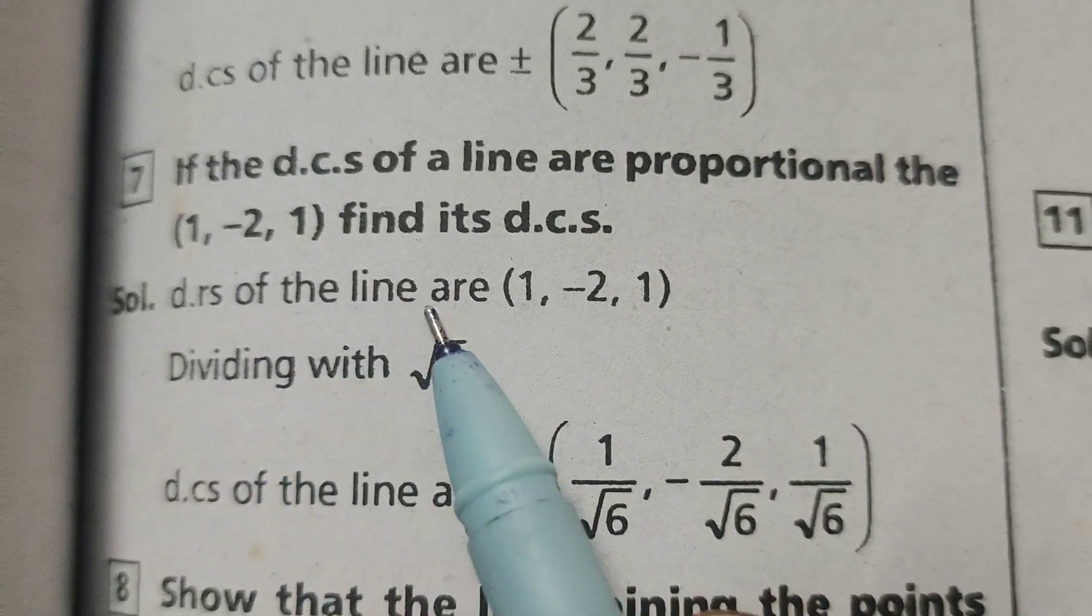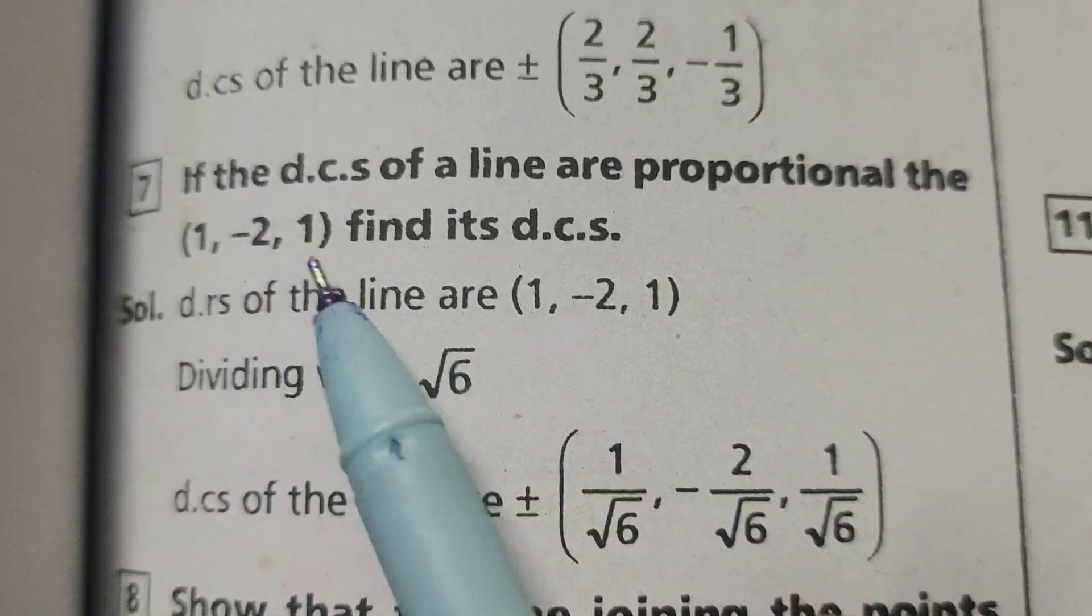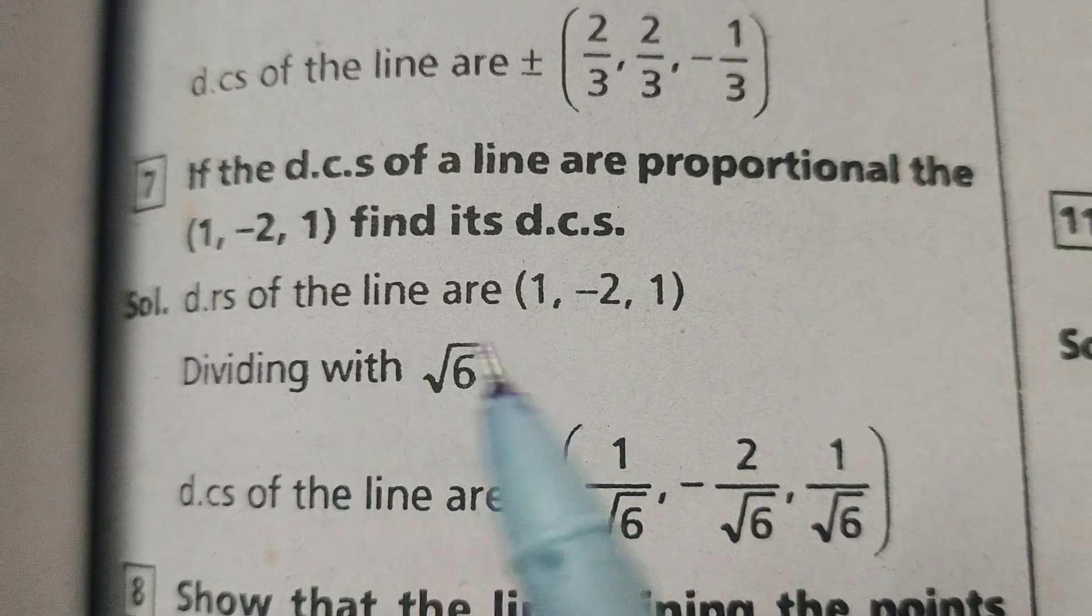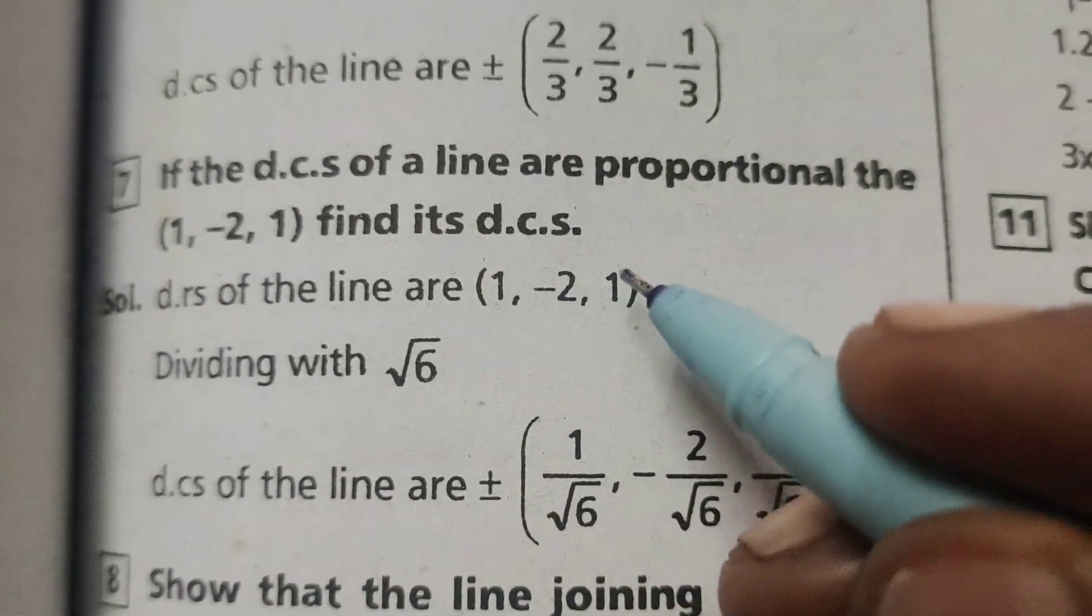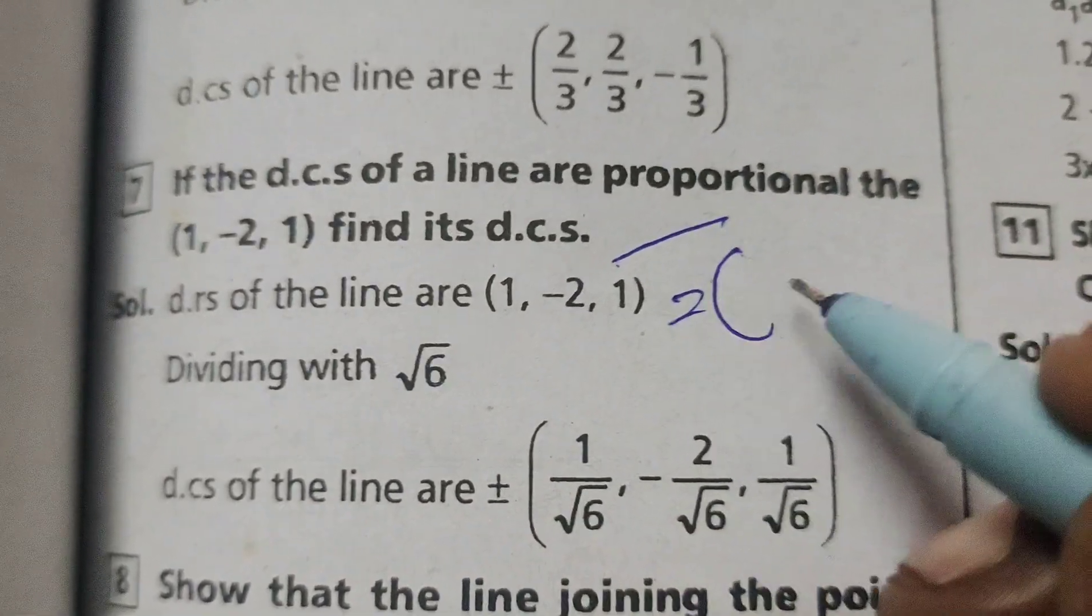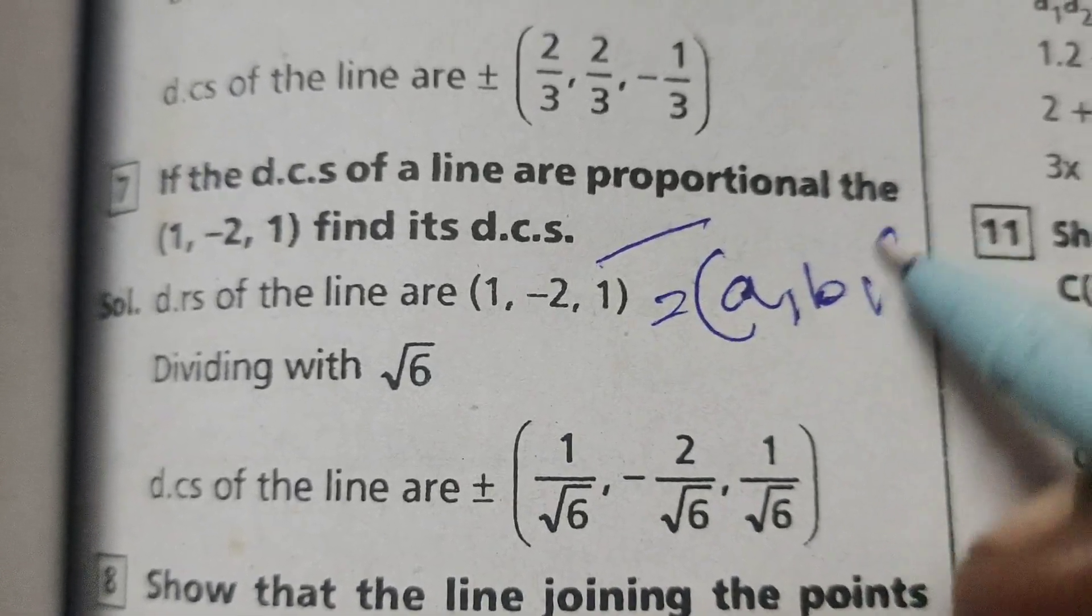Direction ratios of the line are 1, -2, 1, dividing with root 6. Why? Because here direction ratios are compared to a, b, c.